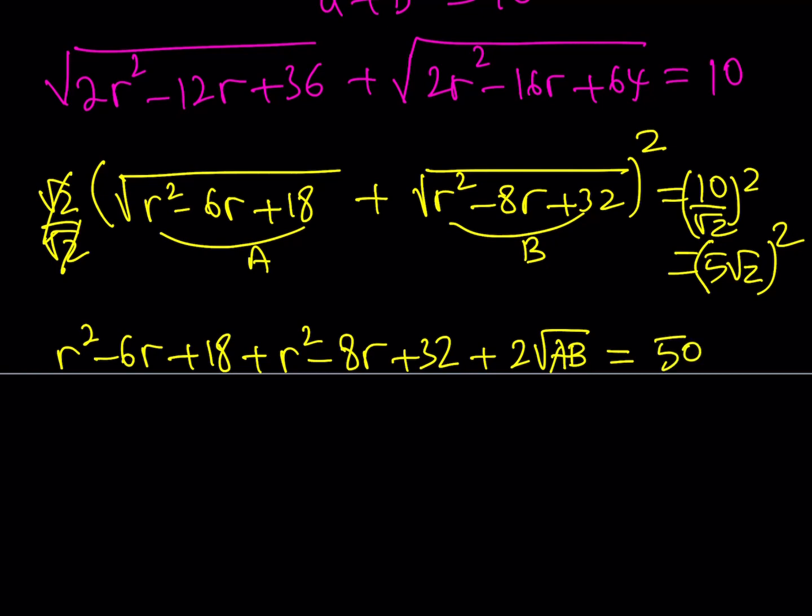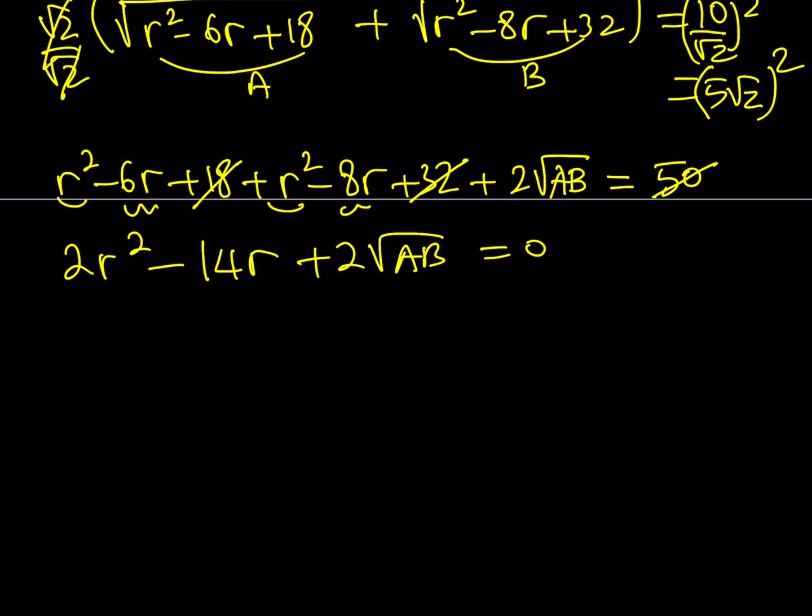Now, what makes it real nice is that 18 plus 32 is equal to 50, so those constant terms cancel out. And what do we get? We got 2r² minus 14r plus 2√(ab) = 0. Obviously, I'd like to isolate 2√(ab) here, so let's go ahead and isolate it, but at the same time, divide everything by 2. So this gives us √(ab) = 7r - r². Now I'm going to square both sides, but it would make sense if you wrote this as r(7-r), because it's easier to square that way.